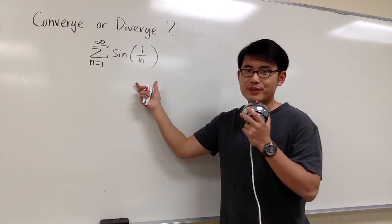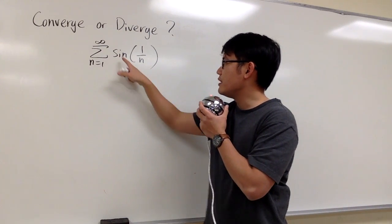We would like to know if this series converge or diverge. The summation from 1 to infinity, sine of 1 over n.